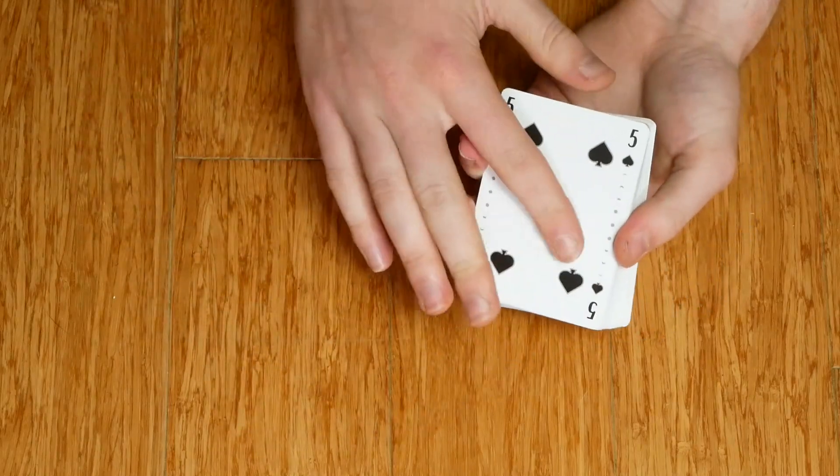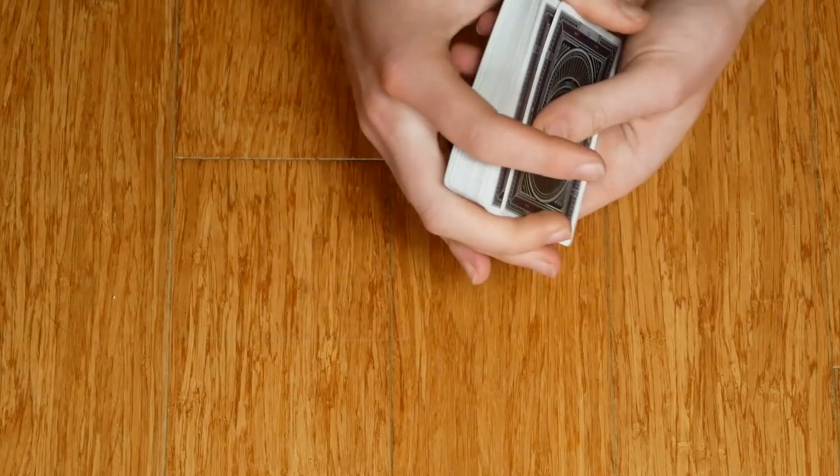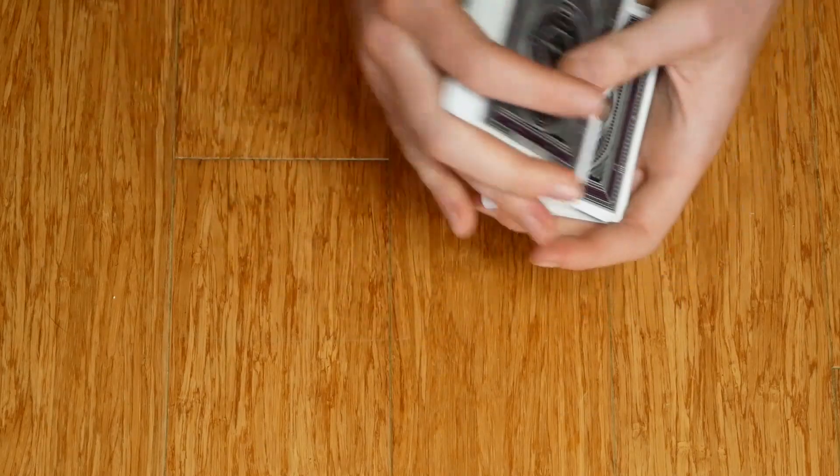Here's your card, five of spades. Now what I'm going to do is I'm going to take that card and shuffle it into the deck somewhere random.